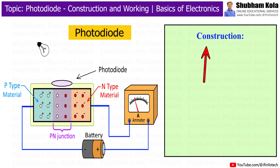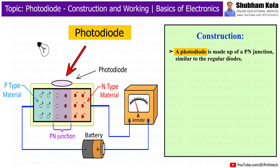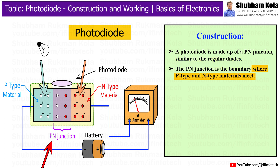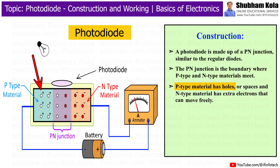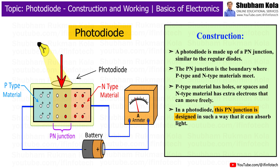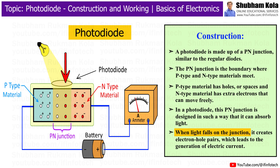Now we will see the construction of a photodiode. A photodiode is made up of a p-n junction, similar to regular diodes. The p-n junction is the boundary where p-type and n-type materials meet. The p-type material has holes and n-type material has extra electrons that can move freely. In a photodiode, this p-n junction is designed to absorb light. When light falls on the junction, it creates electron-hole pairs which leads to the generation of electric current.